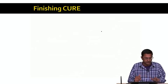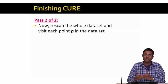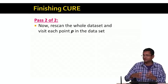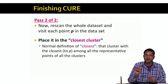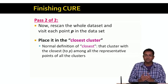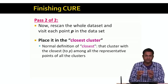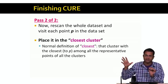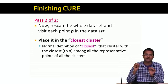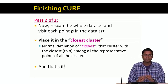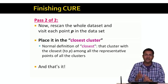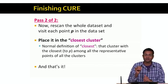That's the first pass of the CURE algorithm. In the second pass, we scan the whole dataset. So far we've been working with a sample of the dataset that fits in memory. Now we go back to the whole dataset sitting on disk, re-scan it, and visit each point P. We take point P and place it in the cluster that's closest to it. The definition of closest is very simple: among the set of representative points of all the clusters, we find the representative point that's closest to P, and assign P to the cluster belonging to that representative point.